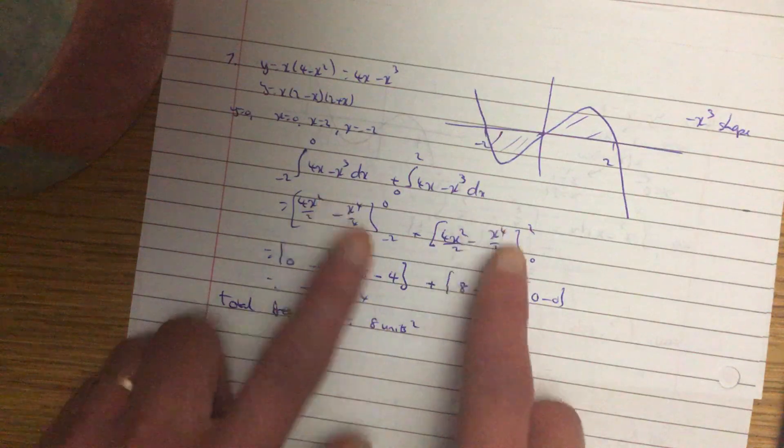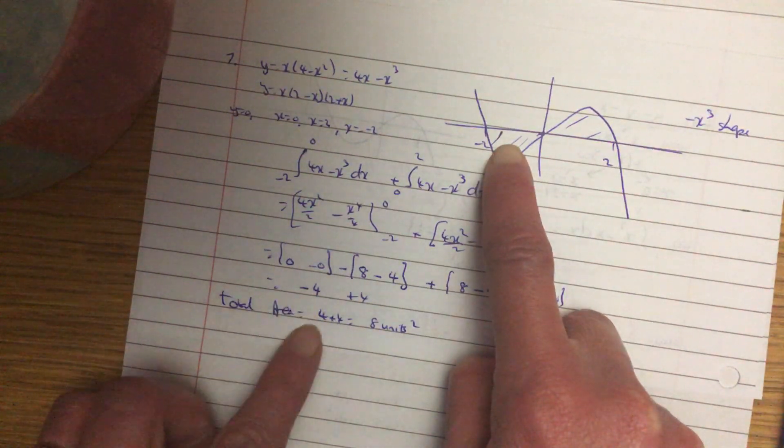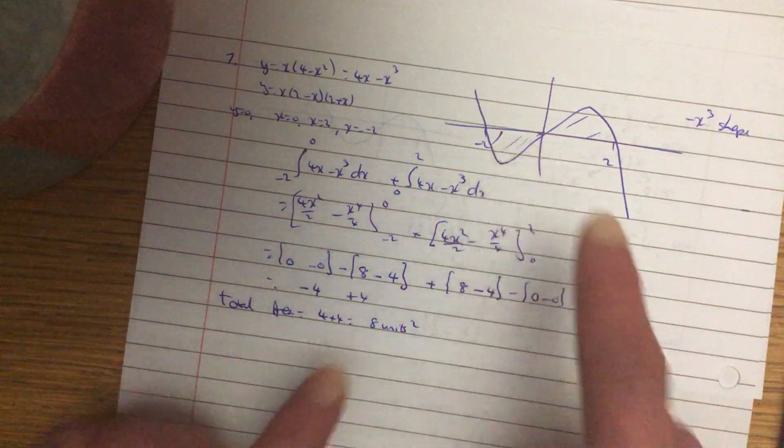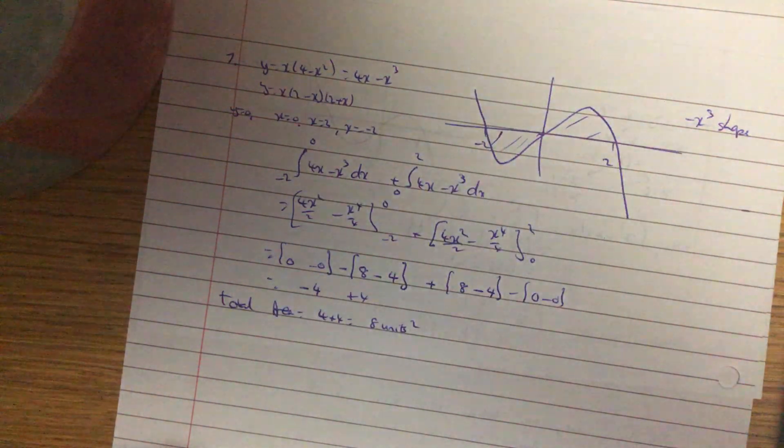Integrate. Put your values in for each bit. Remember this is a negative one here. So whenever you are in the total area, do it as a positive. Never go from minus 2 to 2. When it is a split area, always do it in the two bits.